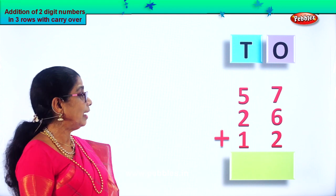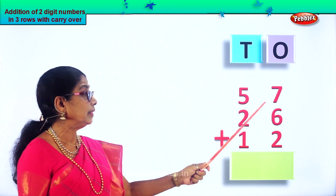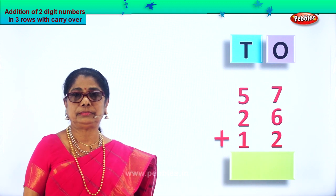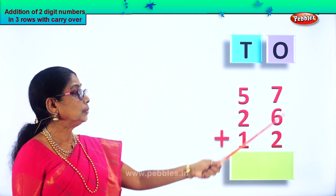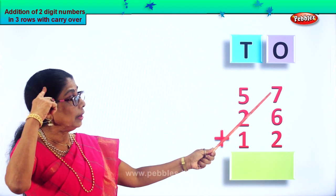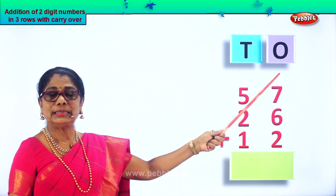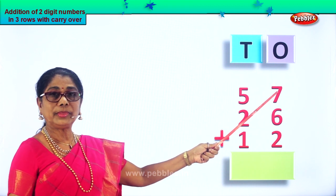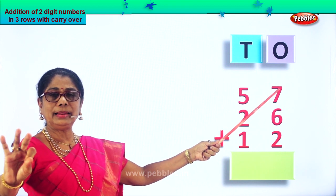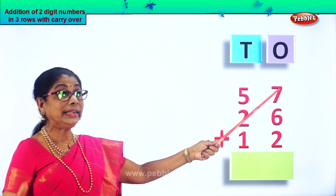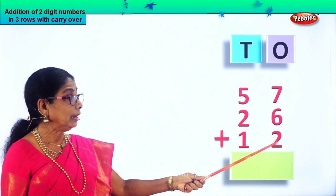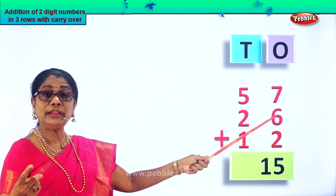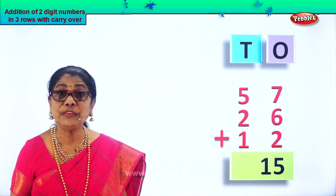Look what we have here. What is fifty-seven plus twenty-six plus twelve? Add all the ones: seven in the mind, six in the fingers. After seven: eight, nine, ten, eleven, twelve, thirteen. Thirteen in the mind plus two: fourteen, fifteen. We got fifteen ones.